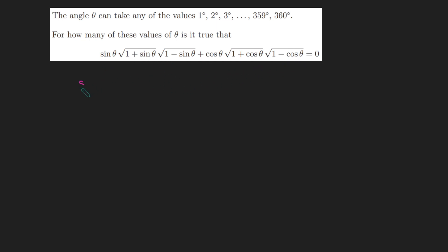I'm going to bring these two square roots together so I get sin(θ) times the square root of 1 - sin²(θ), and similarly cos(θ) times the square root of 1 - cos²(θ), and this all equals 0. Now we're going to use the trig identity sin²(θ) + cos²(θ) = 1. So 1 - sin²(θ) is just cos²(θ).